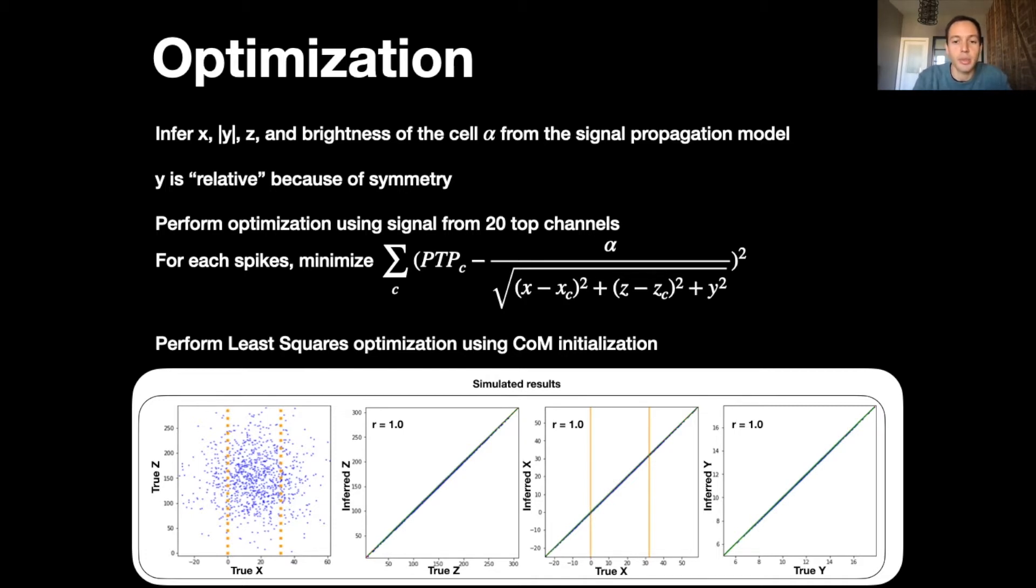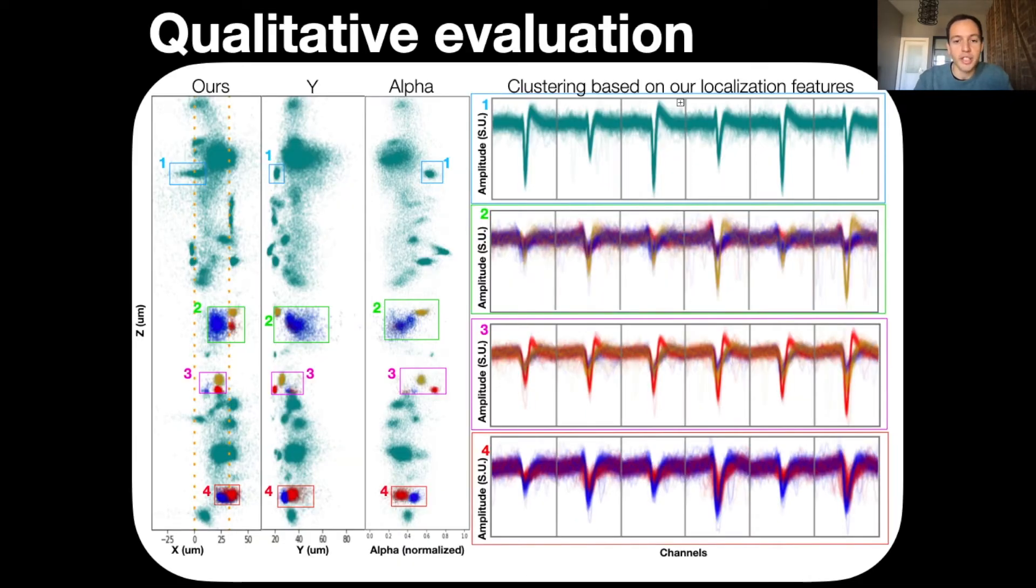Now let's look at the results. The left panel here shows the localization features of the spikes along the Neuropixels probe. The channels of the Neuropixel probe correspond to the orange dots. What we see is that the localization induces clusters of spikes, and what we want ideally is each of these clusters to correspond to one neuron.